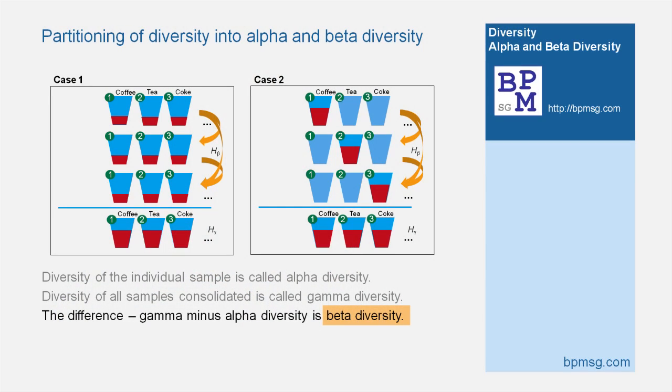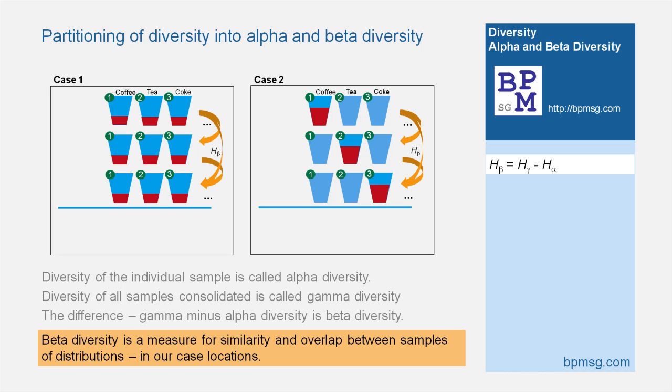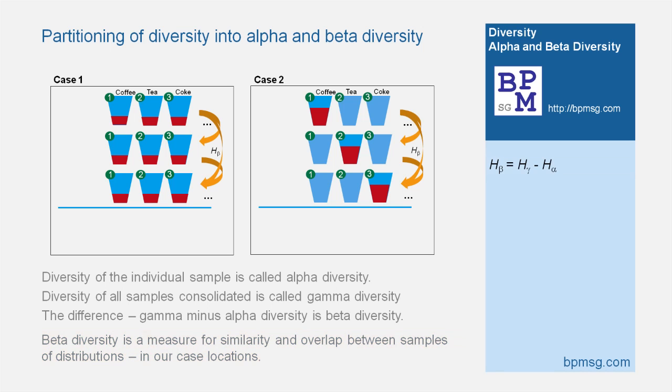What does beta diversity stand for and how can we interpret it? Beta diversity is a measure for the similarity and overlap between samples of distributions — in our case, locations. Partitioning diversity into alpha and beta diversity allows us to gain insight into the variation across samples.